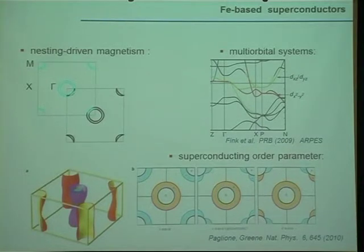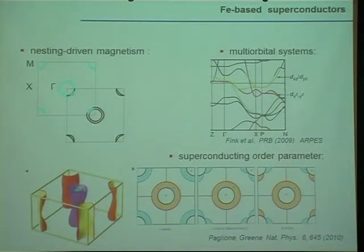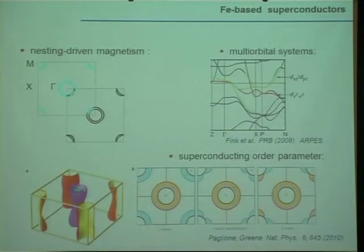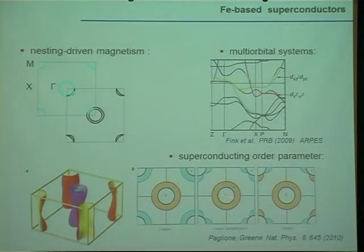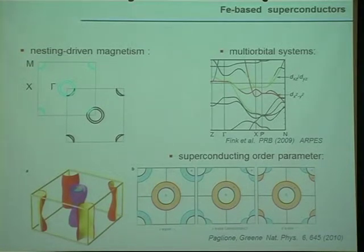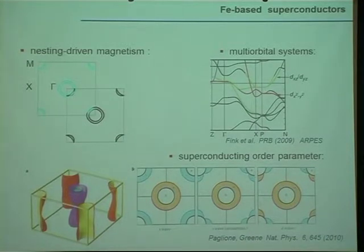The third non-universal feature in these materials is the symmetry of the superconducting order parameter. In the high-TC cuprates, these materials are d-wave superconductors. Here, there are materials where one finds no nodes — they are s-wave, extended s-wave. Some other materials show nodes in the symmetry of the order parameter, so d-wave superconductivity has been discussed. For instance, in the framework of KFe₂As₂, there is a discussion whether under pressure the system also changes the symmetry of the order parameter. There is definitely not a universal behavior regarding the superconducting order parameter.